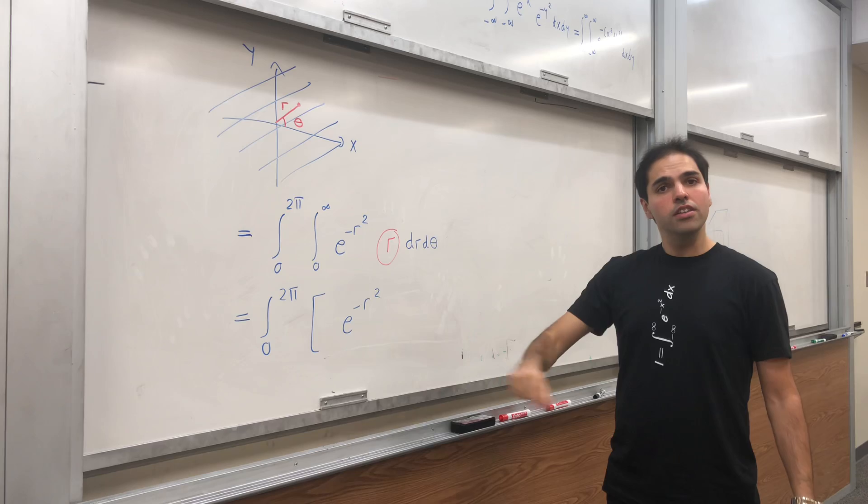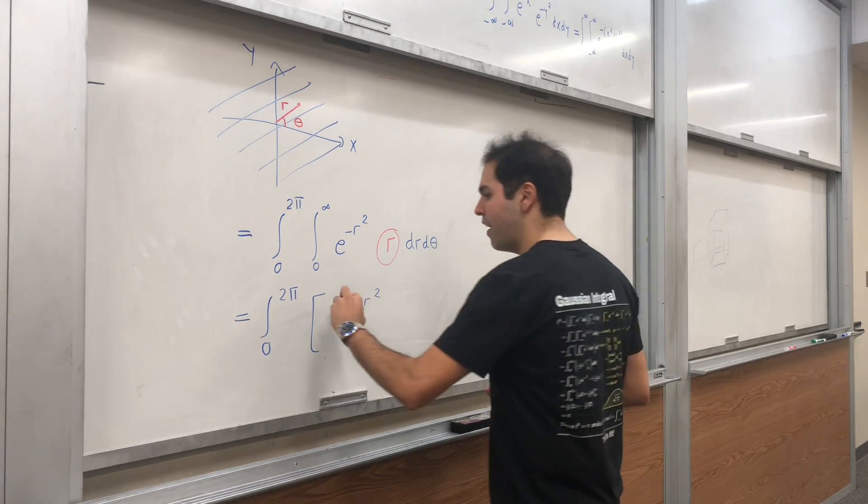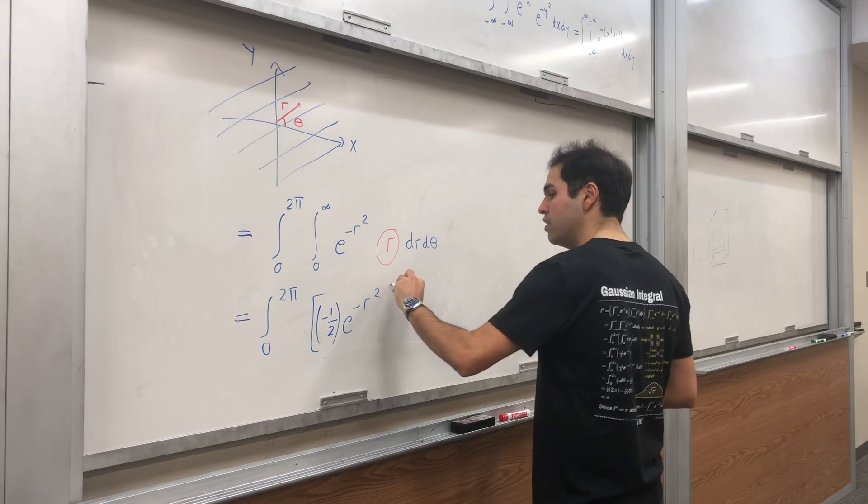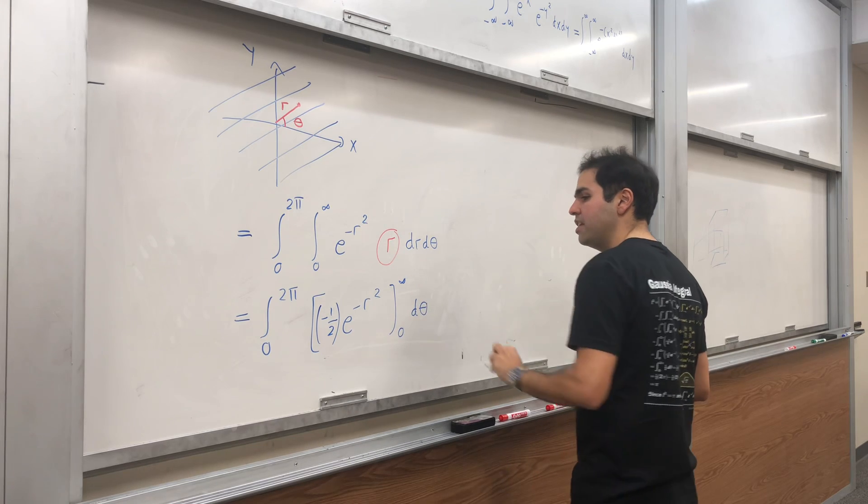So in order to kill off that negative two, you divide by it, so it becomes minus one half. So it becomes -1/2 e^(-r²) from zero to infinity, dθ.